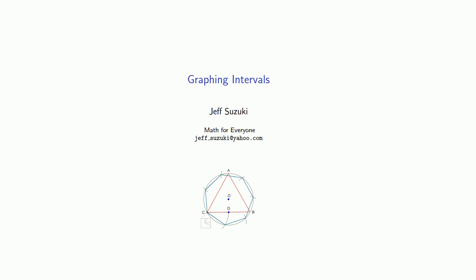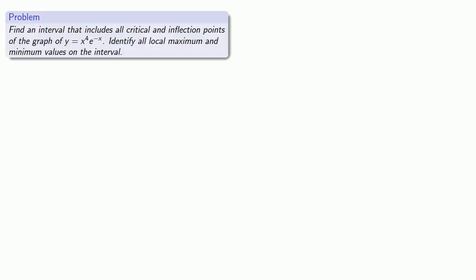But one problem is that these are computers and they will only show us what we ask them to show us. For example, consider the graph of y equals x to the fourth e to the minus x. Now I can enter this into a graphing calculator and it will produce a graph, but not necessarily a graph that's useful.